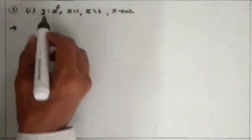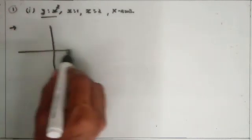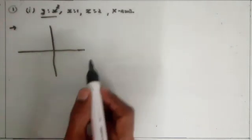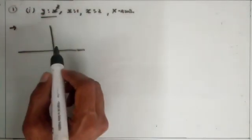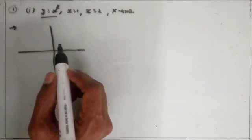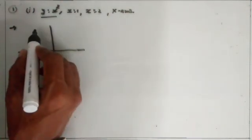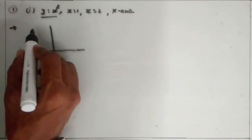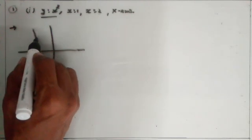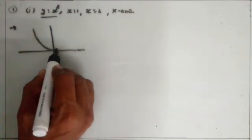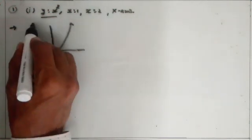First, sketch a rough diagram of y is equal to x square. Here y is equal to x square is a parabola. We know that x square is equal to 4ay. The y-axis becomes the axis of this parabola. The coefficient of y is positive, so the positive direction of y-axis becomes the axis of the parabola. And (0,0) satisfies this equation, so (0,0) becomes the vertex of this parabola. So this type of graph we get for this parabola.